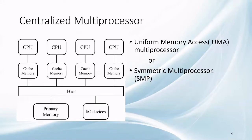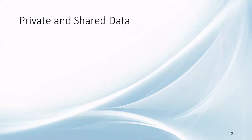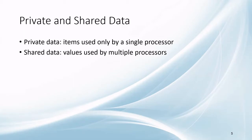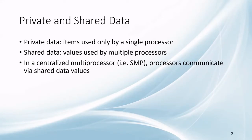It is called Uniform Memory Access or UMA because the access time of memory from every processor is the same. The presence of cache memory also reduces the load of the bus and the shared memory. Now, data can be private or shared. If the data can be accessed by only one processor, then it is called private data. And if it is shared among the processors, it is called shared data. In a centralized system, they communicate through shared data.